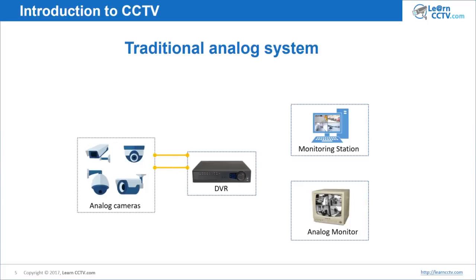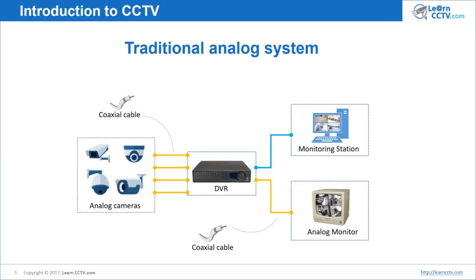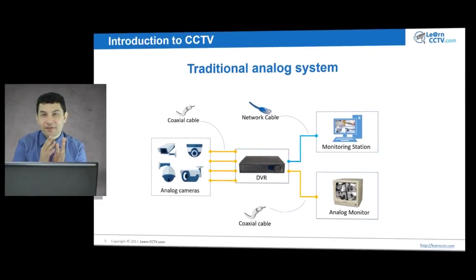What I'm going to do is connect cables from the cameras to the DVR — one cable per camera. I'm going to use a coaxial cable, connecting from the camera to the DVR. You can also connect the same type of cable from the DVR to the analog monitor. Then one more cable goes from the DVR to the monitoring station — that will be the network cable. The camera sends the video, and you can also view it through your network using a computer, tablet, or cell phone.